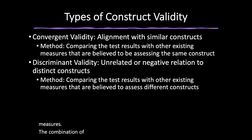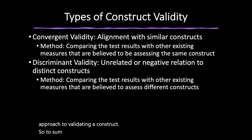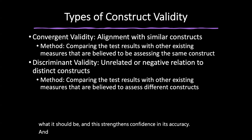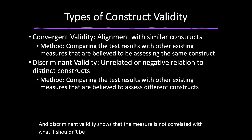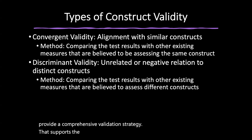The combination of convergent and discriminant validity offers a robust approach to validating a construct. Convergent validity shows the measure is correlated with what it should be, strengthening confidence in its accuracy. Discriminant validity shows the measure is not correlated with what it shouldn't be, reinforcing its specificity. Together, these aspects provide a comprehensive validation strategy supporting the accuracy, precision, and uniqueness of the construct measure.